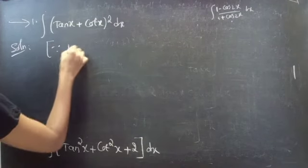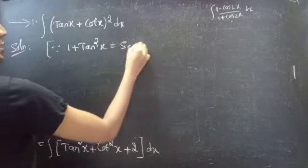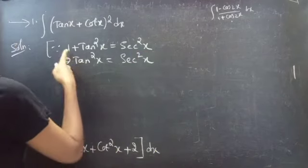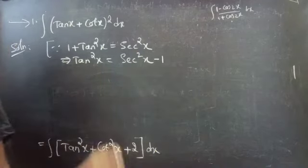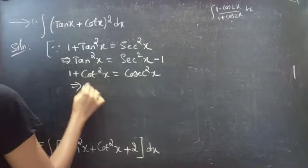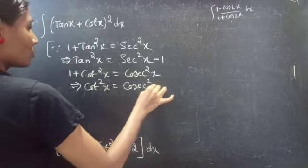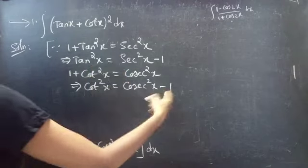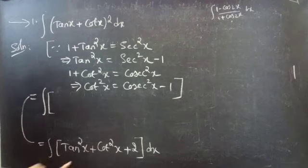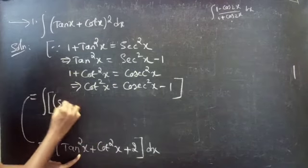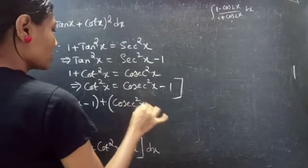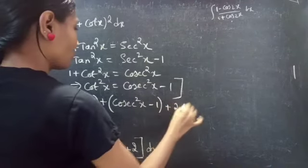Since we know that 1 + tan²x = sec²x, we get tan²x = sec²x - 1 by moving the 1 to the right-hand side. And also, 1 + cot²x = csc²x, so cot²x = csc²x - 1. So this becomes the integral of (sec²x - 1) + (csc²x - 1) + 2, all times dx.